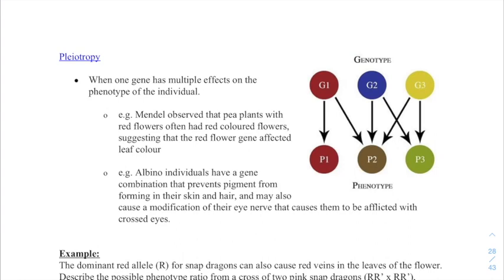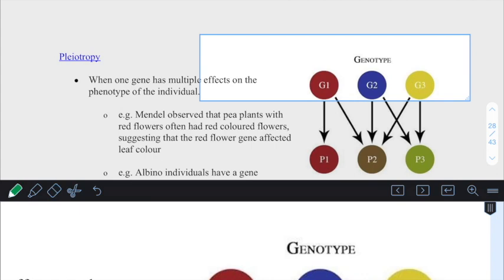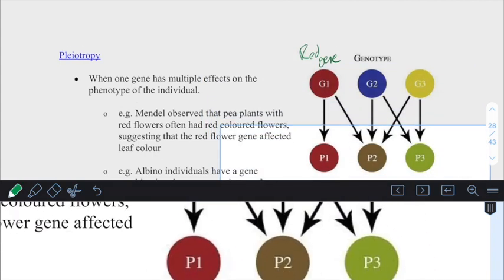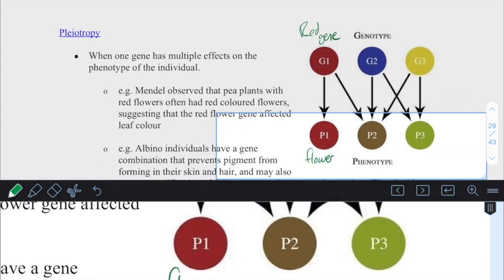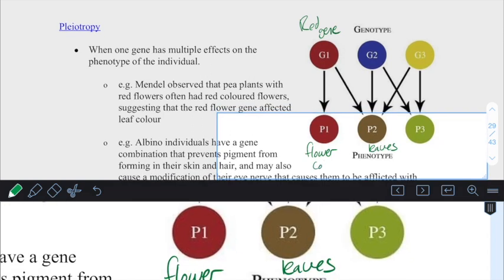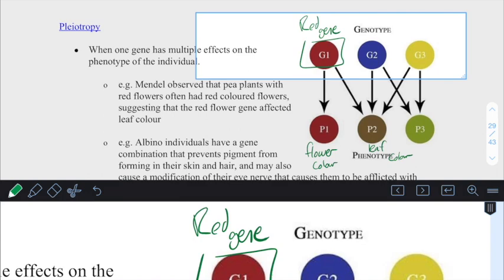So I like these examples that I've got right here, which is Mendel, for example, when he was counting up his pea plants, occasionally he would have red flowers. And whenever he had the red flowers, he would also note red veins in the leaves. Looking back now, we realized that if you had this red gene, then that red gene might have effects on the flower and the leaves. So flower color and leaf color. So this single gene, gene number one here, is affecting more than one trait.